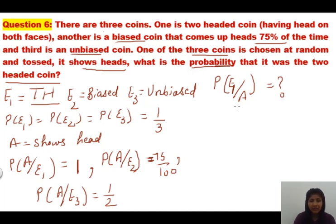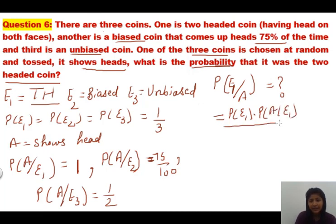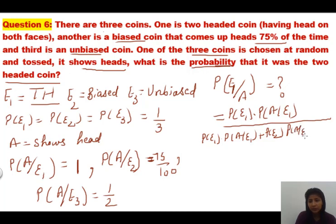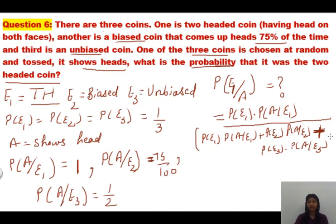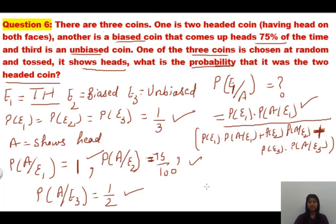Now P(E1|A) is calculated using Bayes' theorem: P(E1) × P(A|E1) divided by all three cases — P(E1)×P(A|E1) + P(E2)×P(A|E2) + P(E3)×P(A|E3). We have all six values required — E1, E2, E3 and the conditional probabilities. We just place the values in the formula and find the answer. Let us move to the next question.